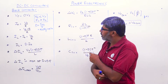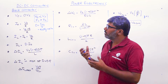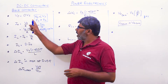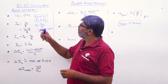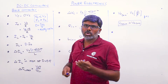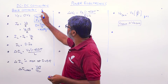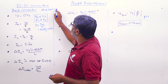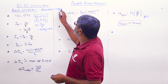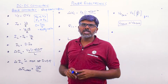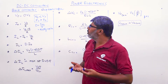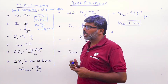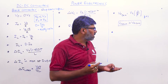Here are the important formulas related to buck converter analysis. The buck converter is called a step-down chopper — step down means the output voltage is less than the supply voltage. The topology of the buck converter is given as follows.